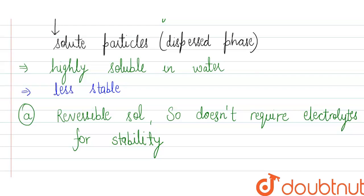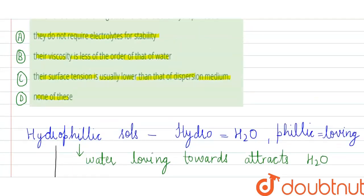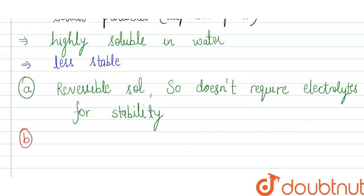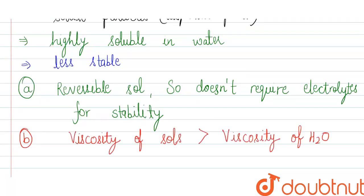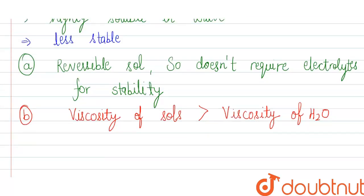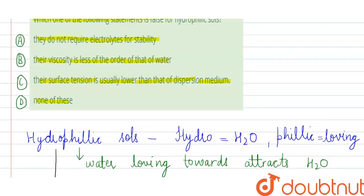Let us check the second option: their viscosity is less, of the order of that of water. This is an incorrect statement, because the viscosity of a sol is greater than the viscosity of water — water has higher flowing power. So our second statement is incorrect.